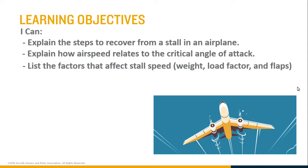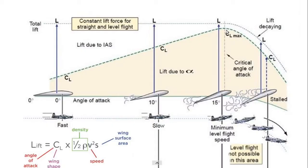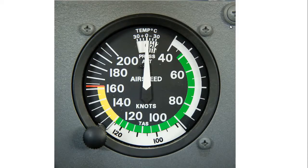Today we're going to list the factors that affect the stall speed — those factors are weight, load factor, and flaps. Stall speed is the speed where at the maximum angle of attack, lift equals weight. So obviously your stall speed is going to depend on weight — the heavier your aircraft, the faster your stall speed is going to be.